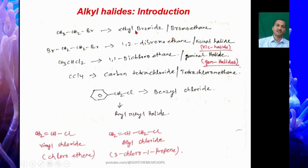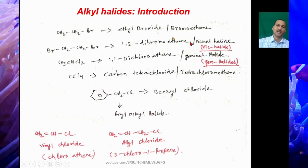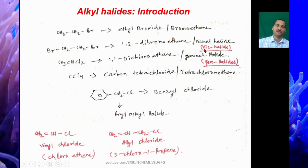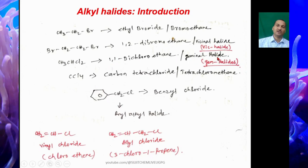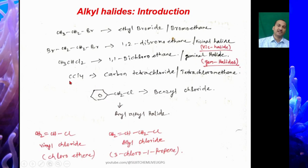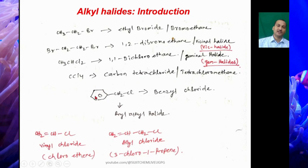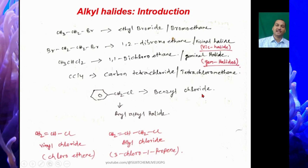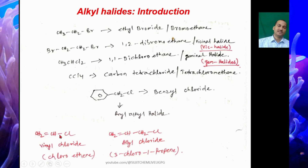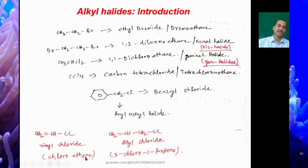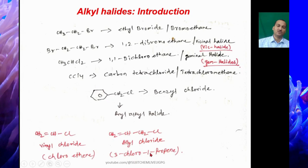CCl4 is carbon tetrachloride or tetrachloromethane. CH3CH2Br is ethyl bromide or bromoethane. BrCH2CH2Br is 1,2-dibromoethane, also known as a vicinal halide. CH3CHCl2 is 1,1-dichloroethane, known as a gem halide. C6H5CH2Cl is benzyl chloride, an aryl alkyl halide. CH2=CHCl is vinyl chloride or chloroethene. CH2=CH-CH2Cl is allyl chloride or 3-chloro-1-propene.